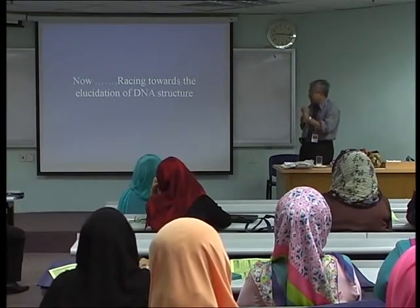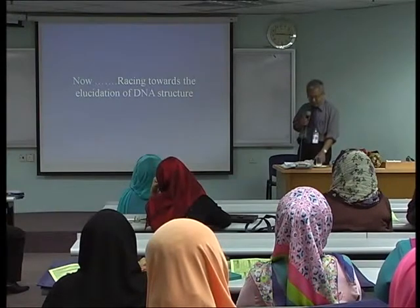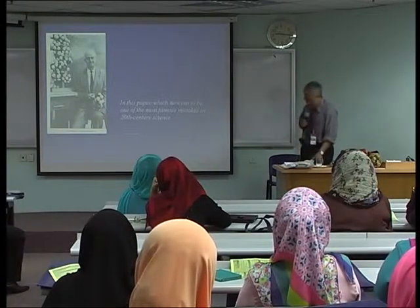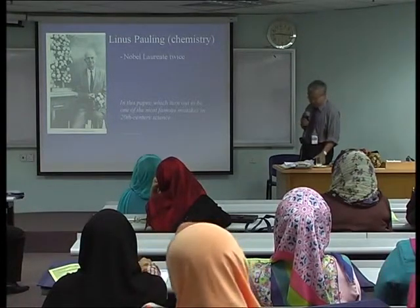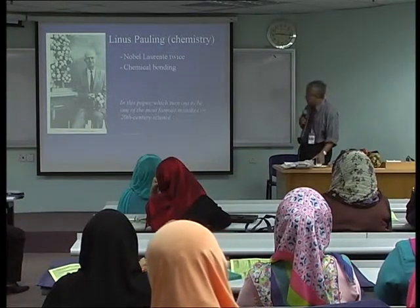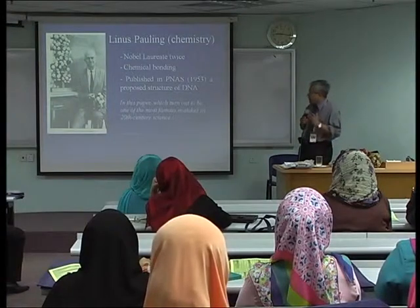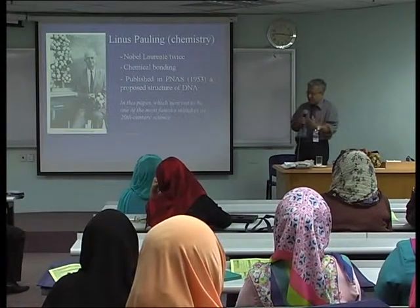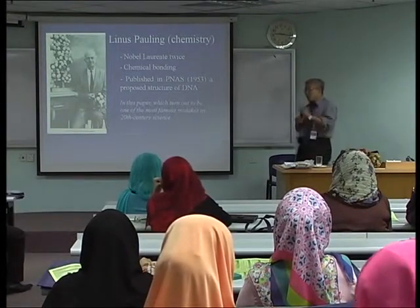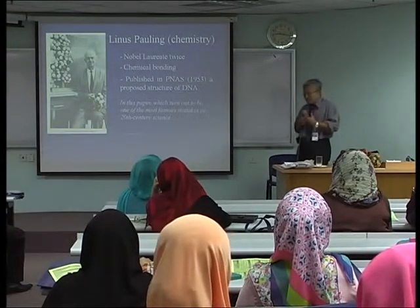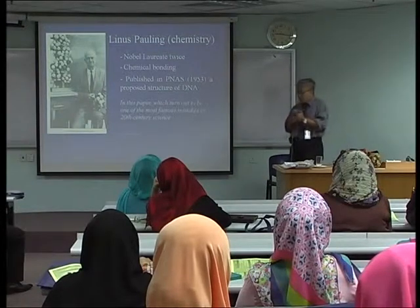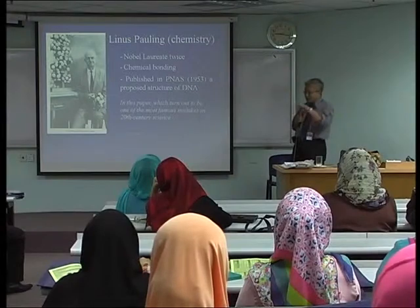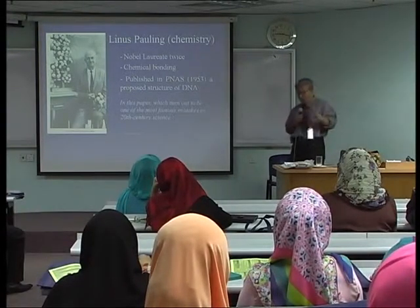So now everybody was racing towards elucidation of the structure — everybody wanted to be the first one. This is Linus Pauling, Nobel laureate twice, who discovered chemical bonding. He did crystallography on the DNA molecule from his previous postdoc and published. Although many of his friends warned him: 'Sir, you shouldn't publish yet — you are putting the phosphate on the inner side and the bases outside, with a three-layer model. This is not a stable molecule, with all due respect.' But Pauling told them to sit down.